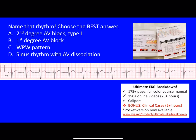Hey guys, hope you're doing well. This was a question that came up on the Facebook page where some were asking us to go into more detail. The question says 'name that rhythm' and choose the best answer. We have a rhythm strip here — lead V5, one of our left lateral precordial leads — and the options are: second degree AV block type 1, first degree AV block, WPW or Wolff-Parkinson-White pattern, or sinus rhythm with AV dissociation. Knowing a little about each of these can help you differentiate and eliminate answer choices.